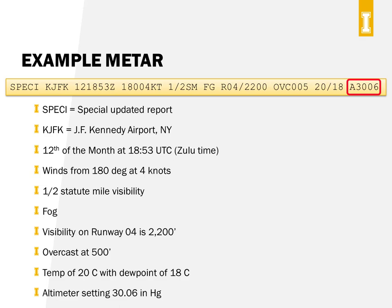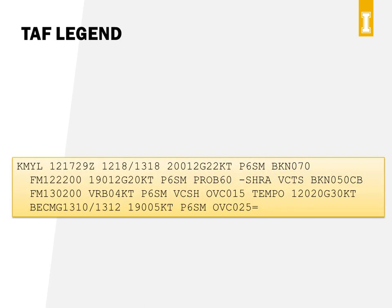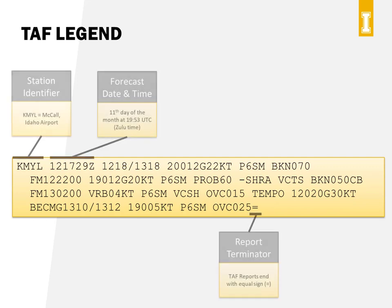Now let's look at TAF reports. TAF reports are forecasts covering a five-mile radius around an airport, issued for either 24 or 30 hours and updated every four hours. TAF reports use most of the same codes as METARs, but have additional codes for the forecasting portion. Let's take a look at an actual TAF report.